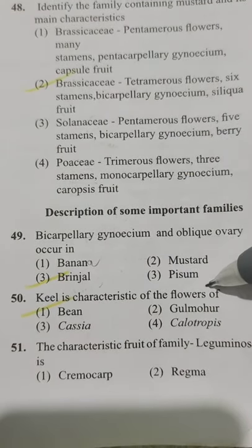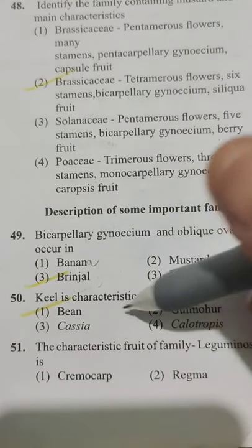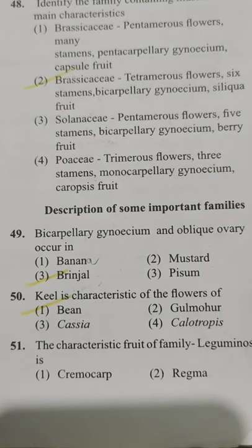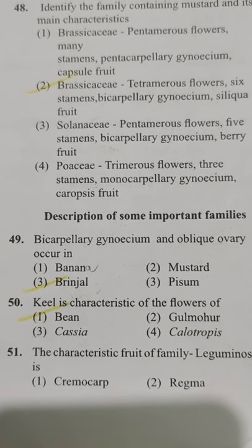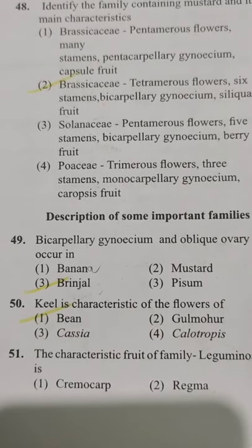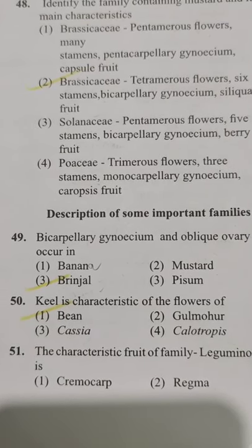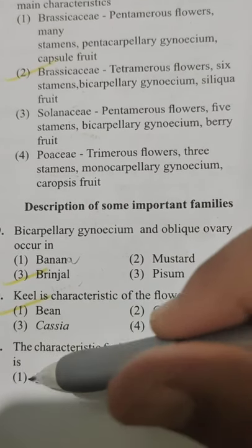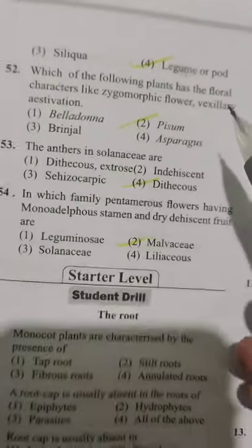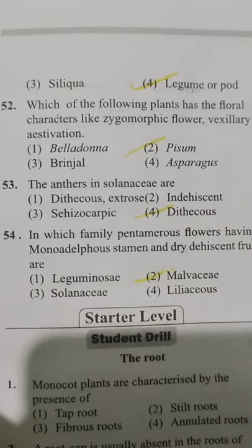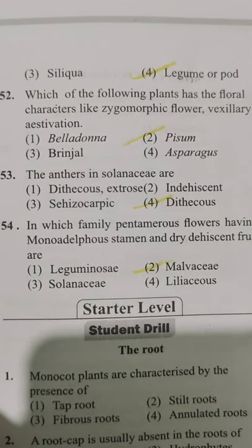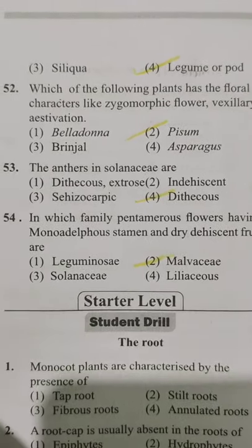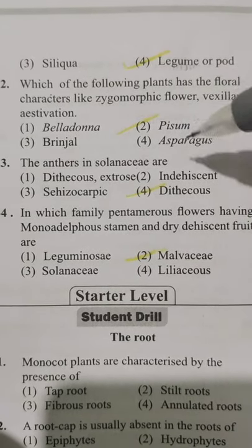Keel is characteristic of flowers of — Option 1 bean, Option 2 Gulmohar, Option 3 Cassia, Option 4 Calotropis. Keel is the characteristic feature of bean — Option 1, as it is seen in the Leguminosae family. The characteristic fruit of family Leguminosae is — Option 1 cremocarp, Option 2 regma, Option 3 siliqua, Option 4 legume or pod. The answer is Option 4, as the legume or pod is the characteristic fruit of family Leguminosae.